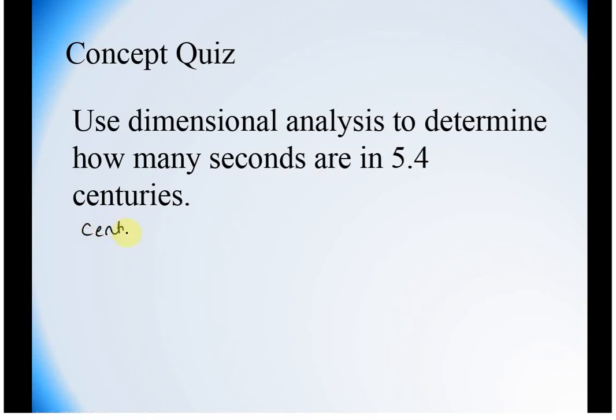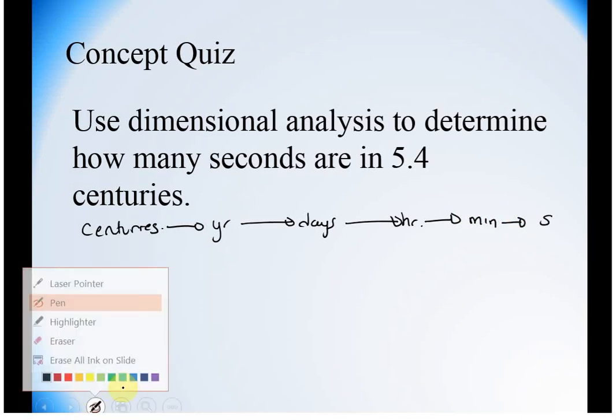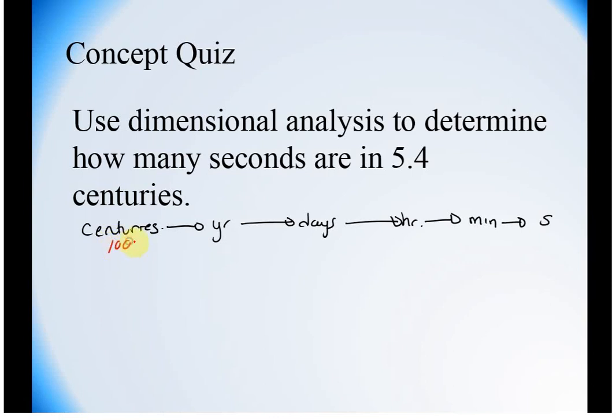So we could look, for example, if we started with centuries, we could figure out how many seconds there are. We can go from centuries to years. From years, we can get to days. From days, we can get to hours. From hours, we can get to minutes. From minutes, we can get to seconds. For example, we know there's 100 years in one century. We know there's 365 days in one year. 24 hours in one day. 60 minutes in one hour and 60 seconds in one minute.